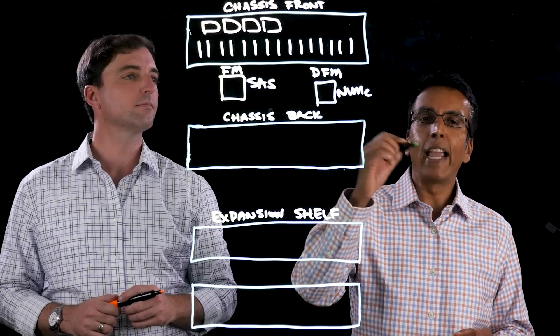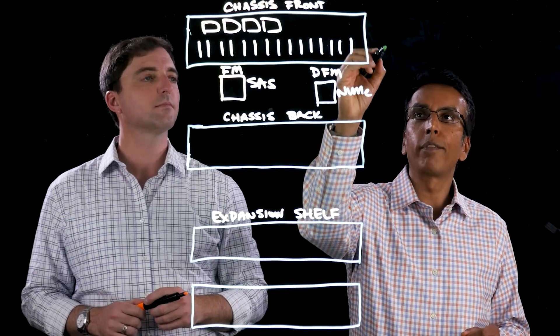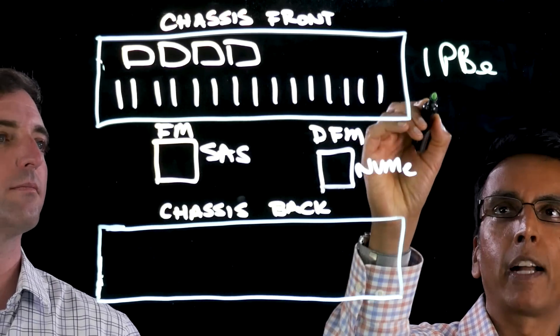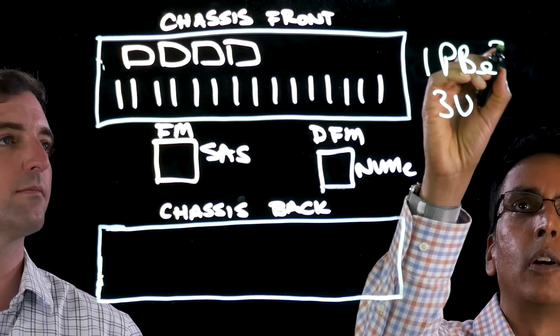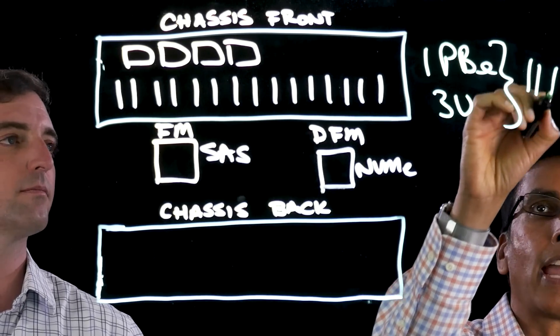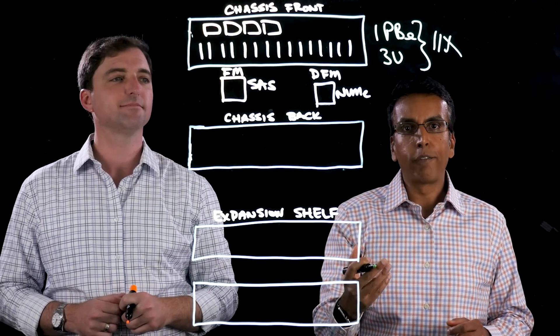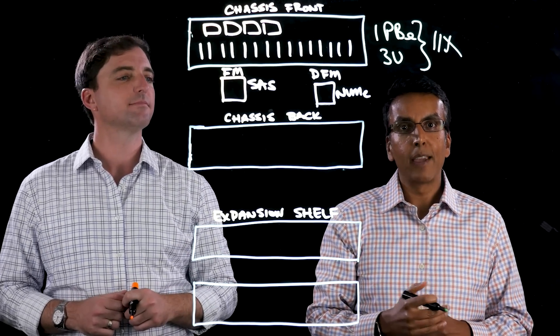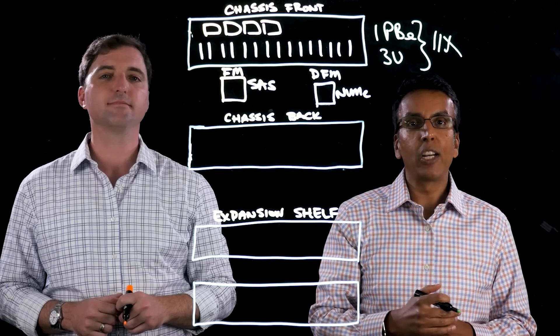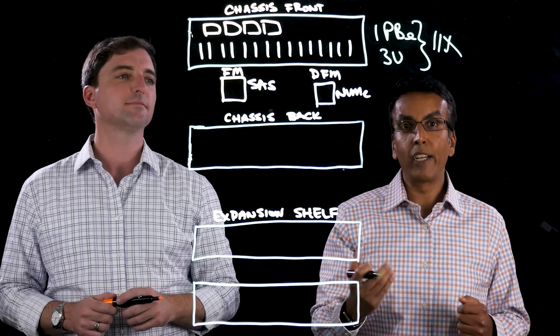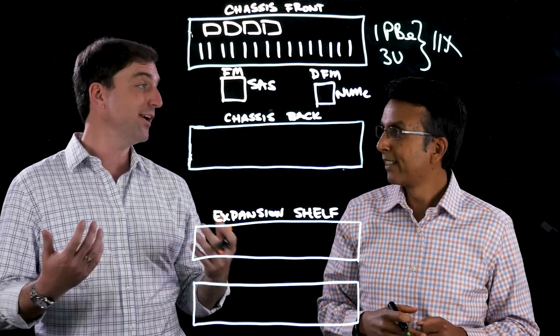What that means is with the 18.3TB Direct Flash module, you can get all the way up to a petabyte effective in just 3U inside FlashArray X. And FlashArray X is mainstream all NVMe array. Imagine you've got a Tier 1 all NVMe petabyte scale array in just 3U. How cool is that? Very cool.